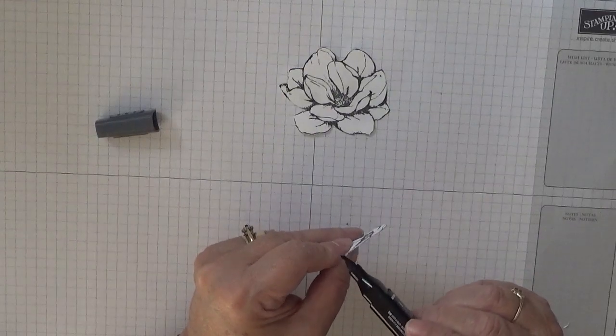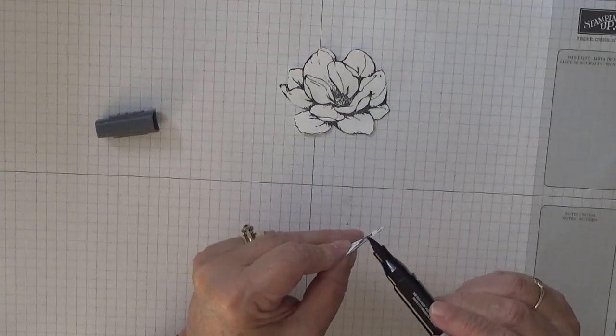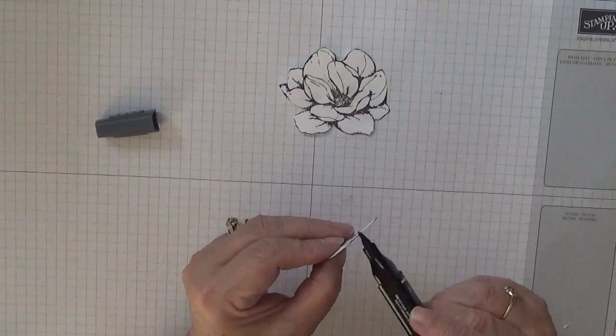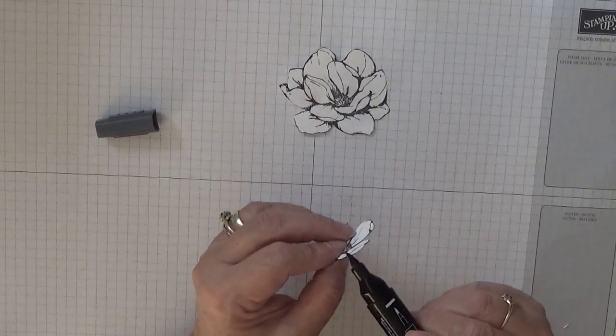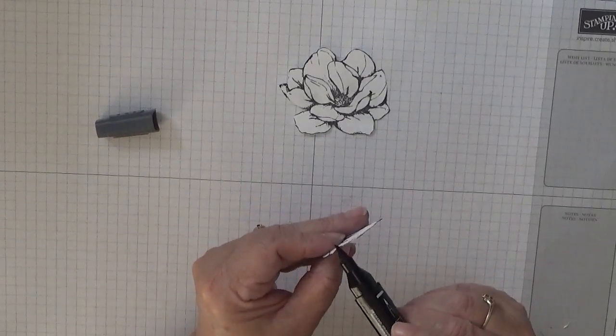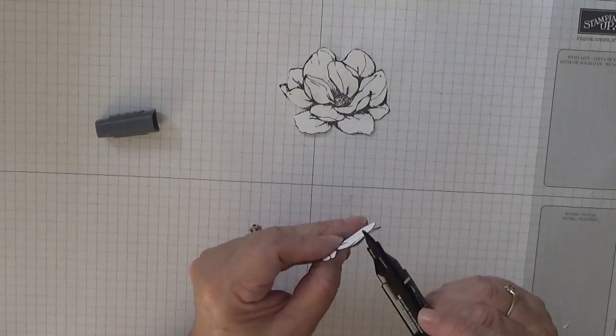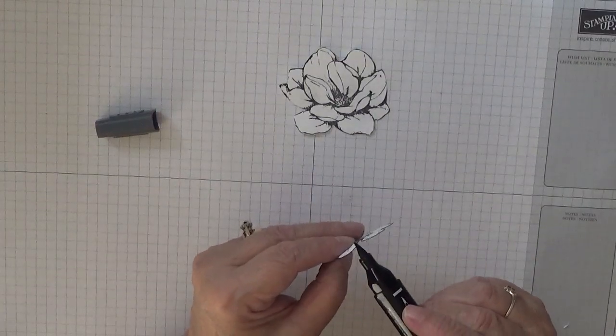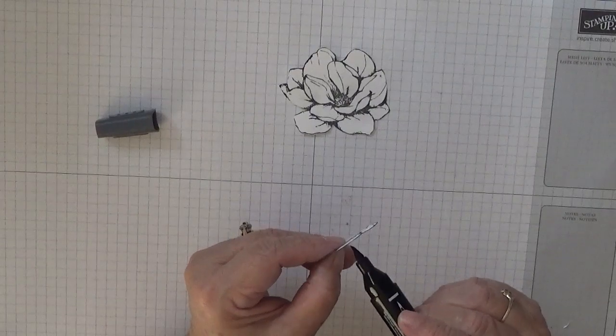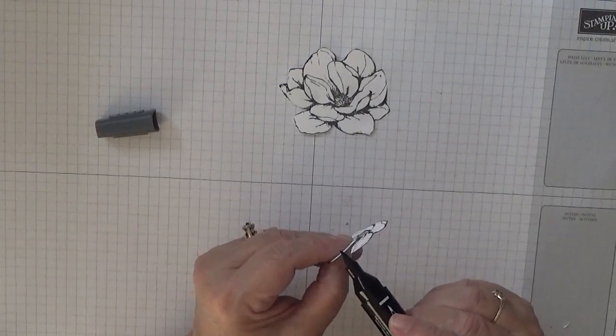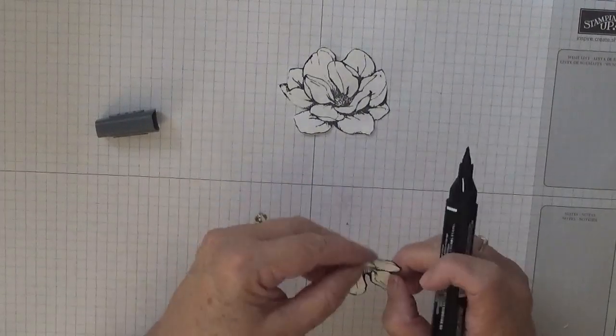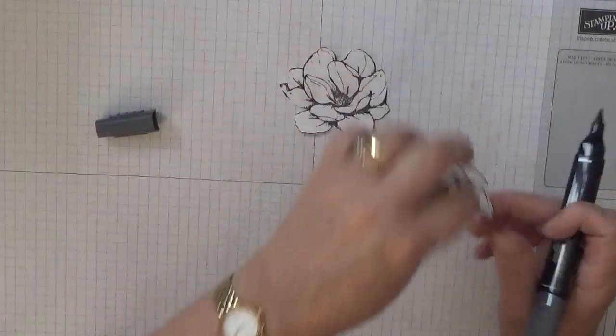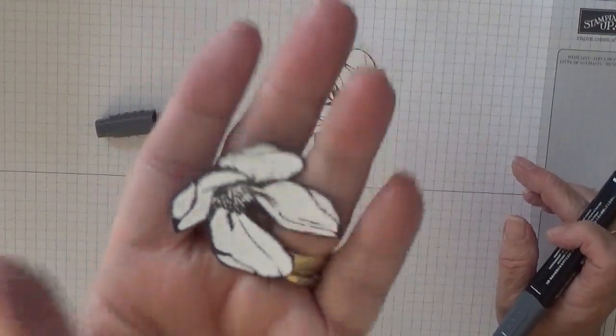Doing it this way, with the back to you, if you do slip, it goes on the back of the flower, like I've just done, and not the front. And now we have a defined stamp.